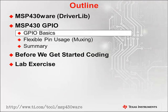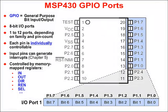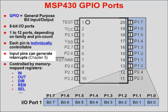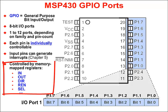Looking at GPIO basics: MSP430 has GPIO ports, anywhere from 1 to 12 ports depending on the device. Generally, the more pins the device has, the more I/O and GPIO ports it has. The MSP430 is built around 8-bit I/O ports, and each pin is individually controllable as input or output. Input pins can also generate interrupts to the CPU — we covered that in Chapter 5. There are a number of registers that allow us to control these GPIO ports: input, output, direction, and more.